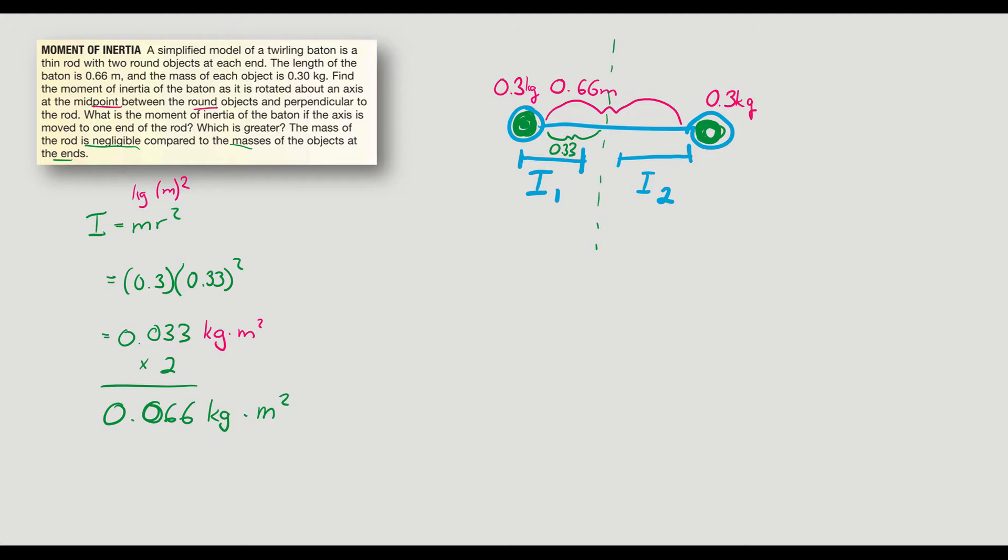And then it says, what is the moment of inertia if the axis is moved to one end of the rod? So now we have the same here, but now I'm rotating from right here. What happens then?